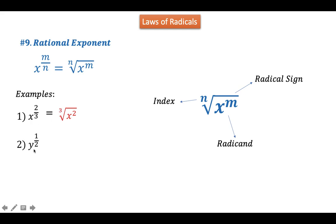For example number 2, y raised to 1 half. Since the exponent is a fraction, this can be transformed into radical form: the square root of y raised to 1. However, we are not always familiar with seeing an index of 2, because this can be simplified into just the square root of y. When we see a radical sign with no index written, it is assumed to have an index of 2. The exponent of 1 can also be removed, since y raised to 1 is simply y, according to the 2nd law of exponents.